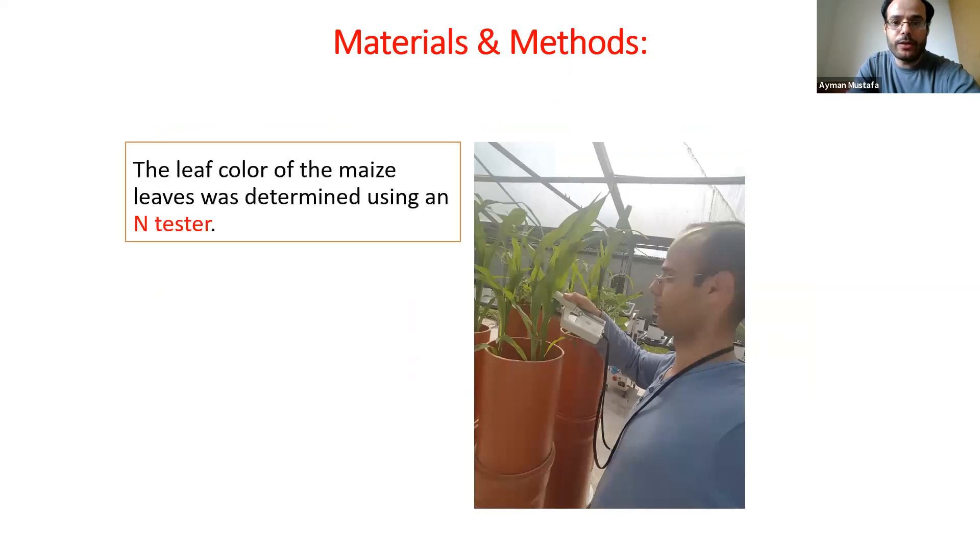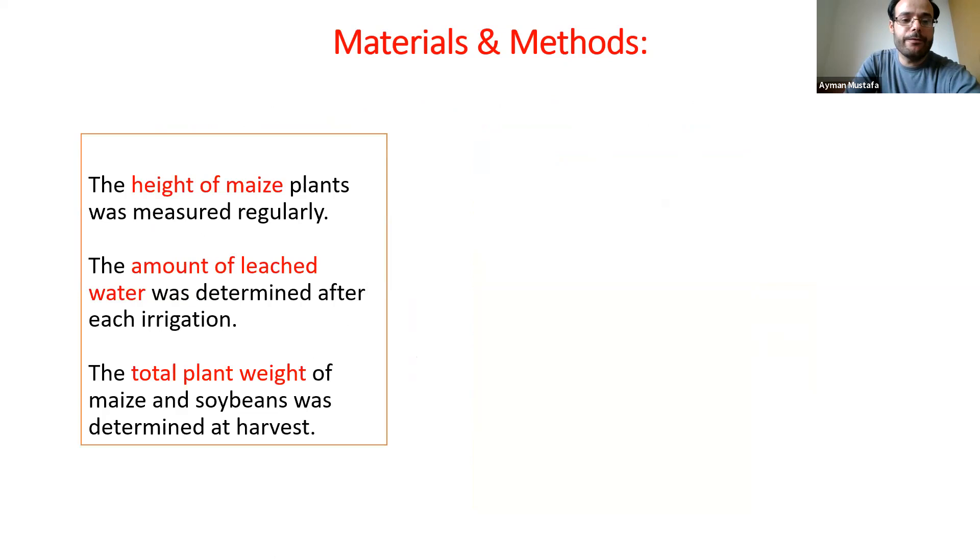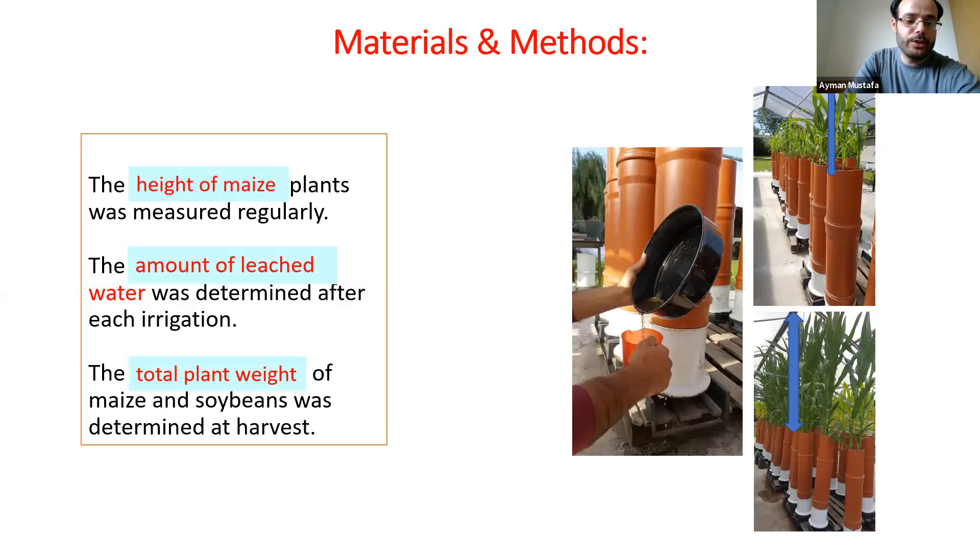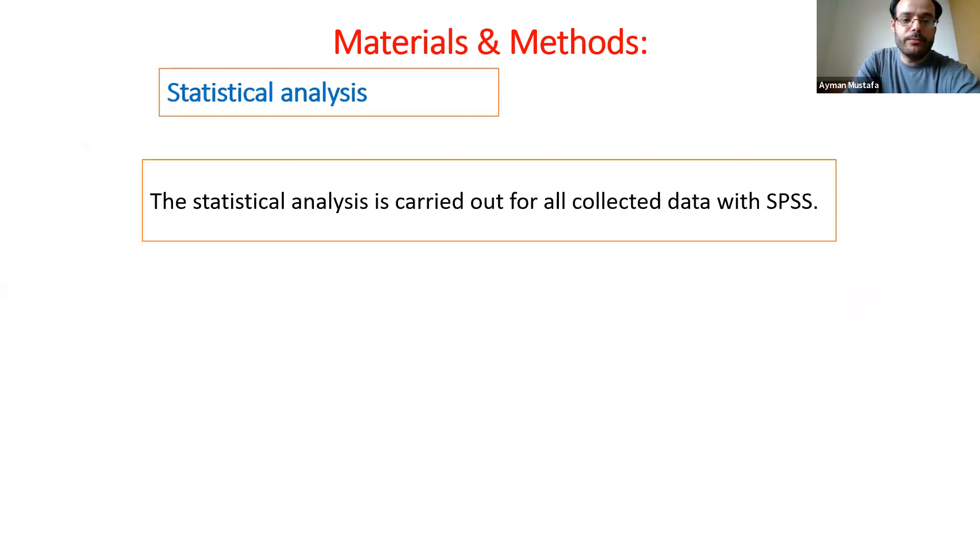We have measured the chlorophyll according to the nitrogen content in the leaves. We have also measured the height of maize in different growth stages, the amount of leached water, the total plant weight, and then we have made the statistical analysis.